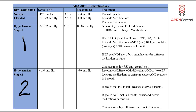Stage 2 hypertension is a systolic blood pressure equal to or greater than 140 mmHg and/or a diastolic reading greater than or equal to 90 mmHg. For these patients, recommend lifestyle modifications and two blood pressure-lowering medications of different classes, and reassess in one month. So stage 2: two meds started at the same time.